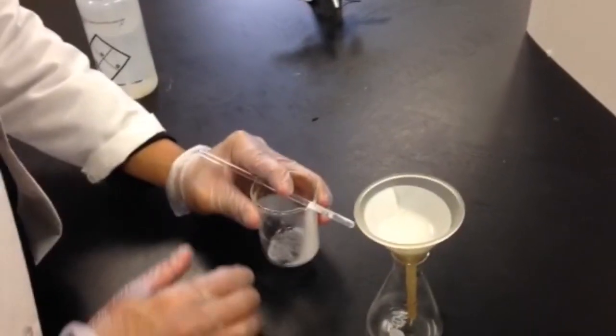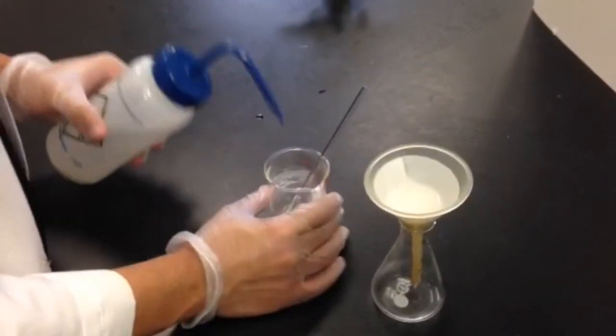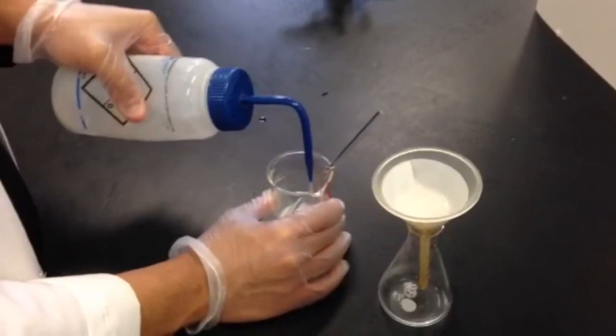You will see a filtrate begin to collect at the bottom of your flask. If there is additional mixture remaining in your beaker, add water and pour the remaining mixture into the funnel.